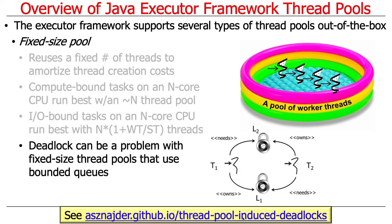When using a fixed-size thread pool, one thing to be careful about is deadlock if your pool has a bounded queue. If your threads do callbacks that generate new requests going into the queue, you can be blocked on a callback waiting for something to complete while the queue fills up, threads remain blocked, and you end up deadlocking. That's why it's generally a good idea to use unbounded queues rather than bounded queues with fixed-size thread pools, though that has its own headaches.